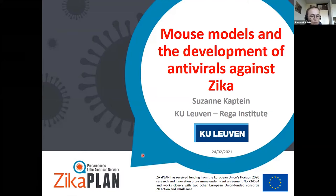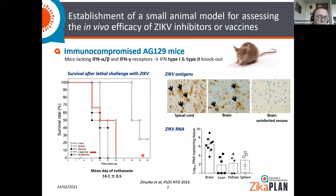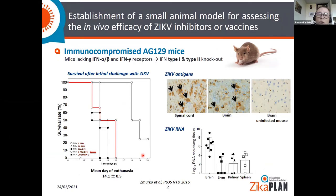Thank you, Louis. Good afternoon, everybody. I will be presenting data from Zika studies using different mouse models. Already two years before the Zika virus outbreak in Brazil, we established a model for Zika virus infections in mice to be able to assess the efficacy of Zika virus inhibitors. For this, we used immunocompromised AG129 mice, which lack the receptors for interferon alpha, beta, and gamma, making them highly susceptible to Zika virus infections.